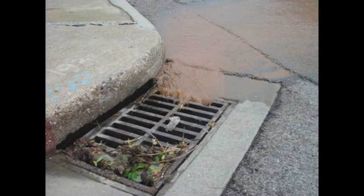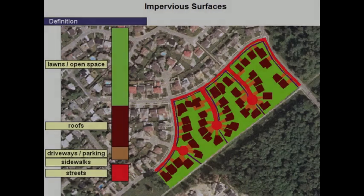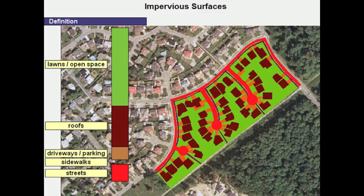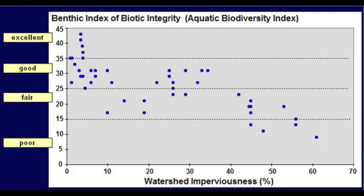This can have an adverse effect on fish and other organisms. Impervious surfaces are a good indicator of stream health, where an area beyond 15% imperviousness results in a reduction in aquatic health and biodiversity.